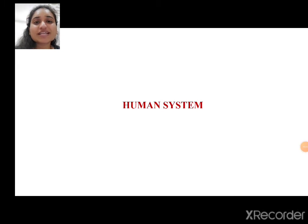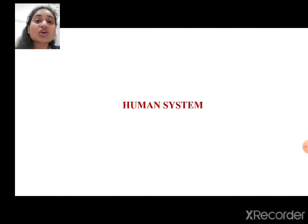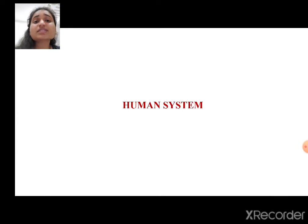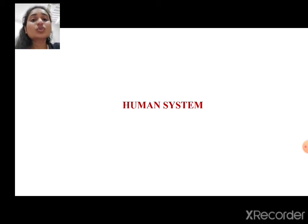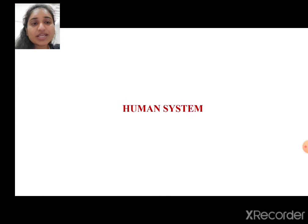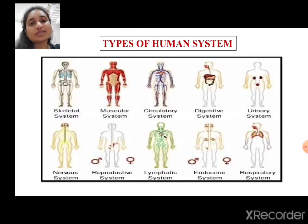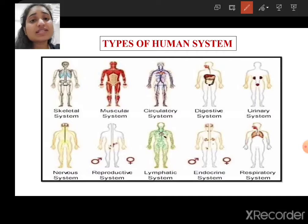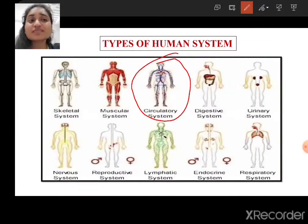Hello everyone, today we are going to study about one of the most interesting topics — the human system. Human system is interesting because as you study about your body parts and organs, it will bring more curiosity to know about their functions and systems. Do you know how many systems are there in our body? We have 10 different types of human systems, as you can see in this diagram, but we are going to concentrate on our circulatory system.